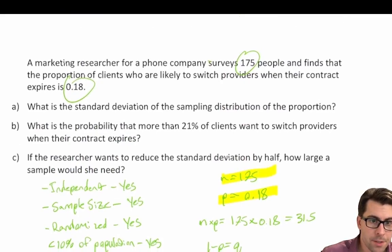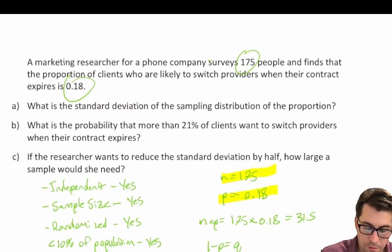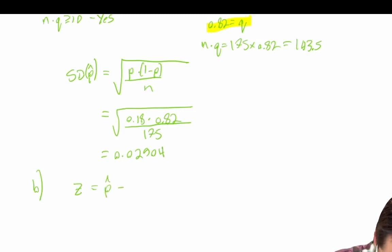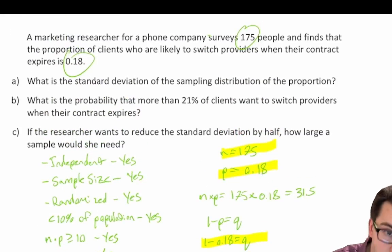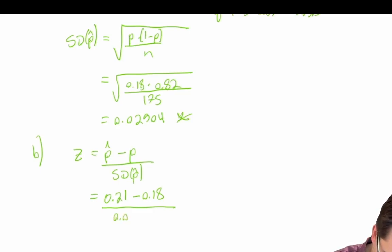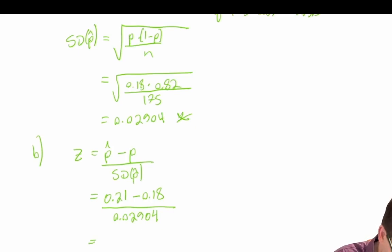For part b, what is the probability that more than 21 percent of clients want to switch providers when their contract expires? The z-score equals the observed proportion minus the expected proportion divided by the standard deviation of the proportion. So z equals 0.21 minus 0.18 divided by 0.02904, which gives us a z-score of 1.03.